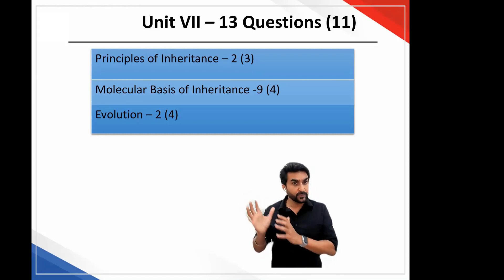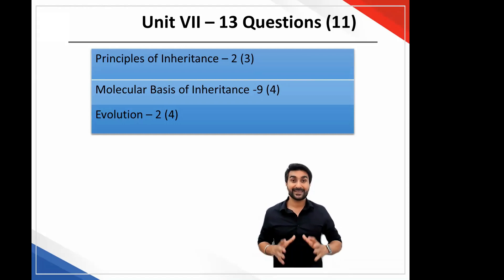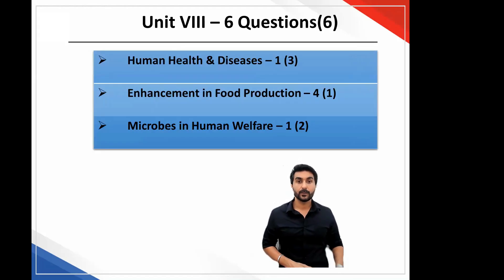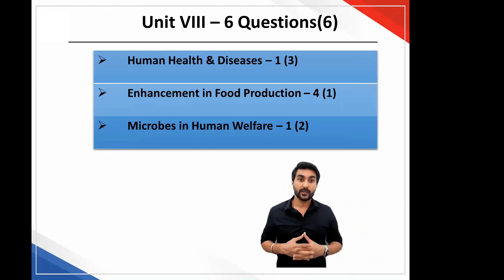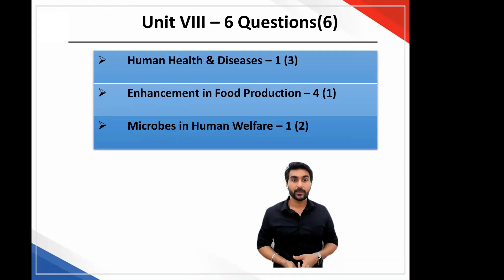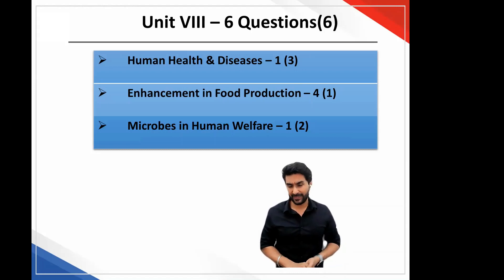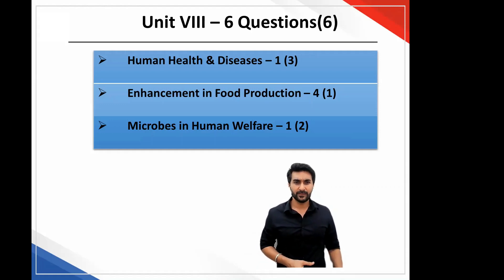The original distribution for evolution of 3-4 questions was on expected lines. This year they've asked 9 questions of molecular basis of inheritance — I don't expect that to be repeated next year. Unit eight, according to me, has been neglected for the past two years. Considering it has the health and disease chapter, the number of questions could have been greater. There was only a single question from human health and disease, 4 from the enhancement chapter, and a single question on microbes. But overall, compared to last year, the number of questions in the unit are the same — though it could rise as it's an important unit.